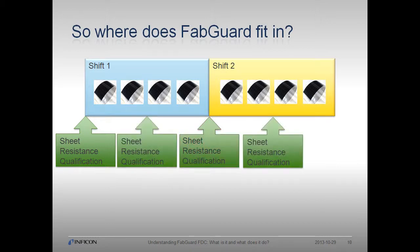We can mitigate this risk by increasing the frequency of qualification — for example, performing it every 6 hours instead of 12 — but this is expensive in time and money, not to mention the loss of productivity. Practically speaking, we need to augment qualification data with information available on a lot-to-lot, wafer-to-wafer, or real-time basis to actively lower our risk of scrap. This includes data collected from the tool as well as any advanced sensors attached to that tool, and that's where FabGuard comes in.